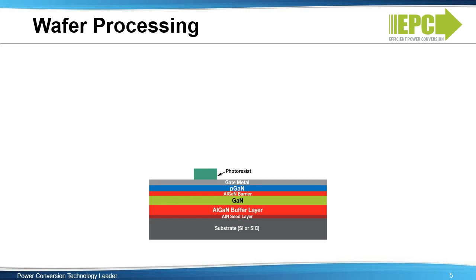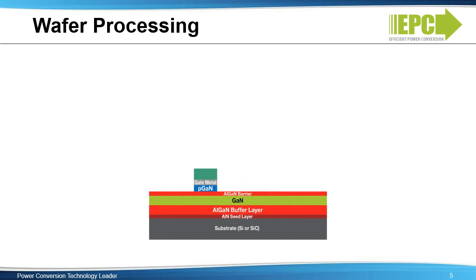First, deposit gate metal and define a gate pattern using photoresist as a protecting layer. Next, etch the gate metal and the PGAN crystal. Then, deposit insulating material and create contact openings to the source, drain, and gate.